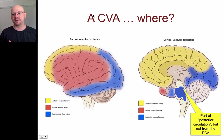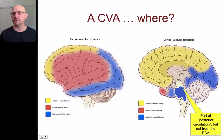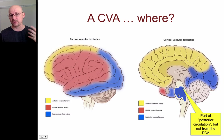Let's look at the broad general areas that the anterior, middle, and posterior cerebral arteries perfuse. Looking at the legend: the anterior cerebral artery perfuses the parts in yellow; the middle cerebral artery perfuses the parts in red or pinky-red; and the posterior cerebral artery perfuses the parts in blue. I've added a little blue down in the brainstem — the medulla and pons — because that's part of the posterior circulation, fed by the vertebral, basilar, and pontine arteries.